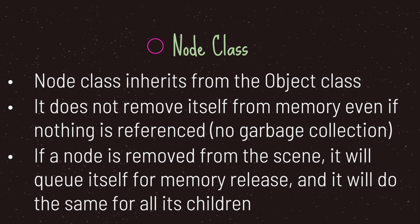We know that a node class inherits from the object class, and therefore it does not remove itself from memory even if nothing is referenced to it. However, if a node is removed from the scene it will queue itself for memory release, and it will do the same for all its children.